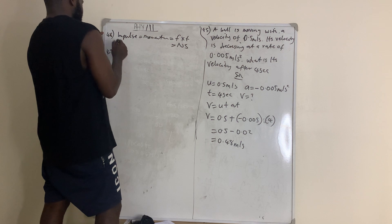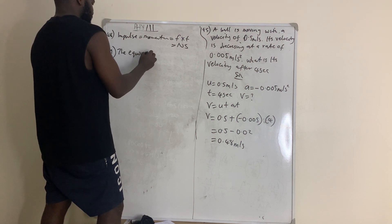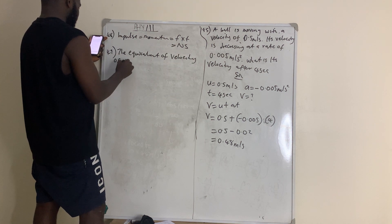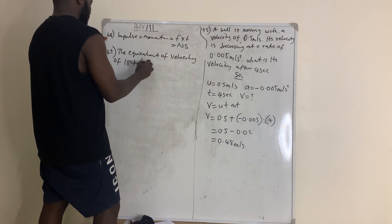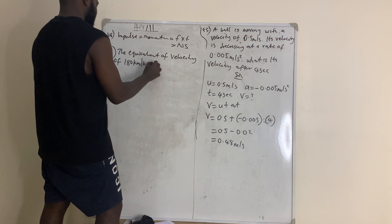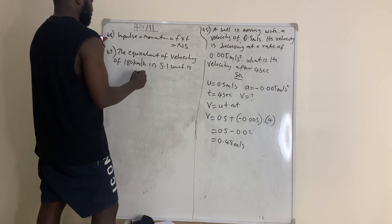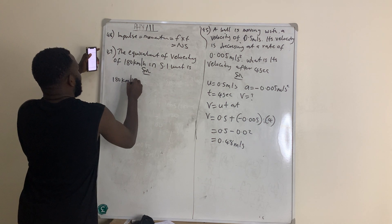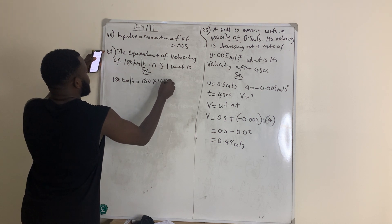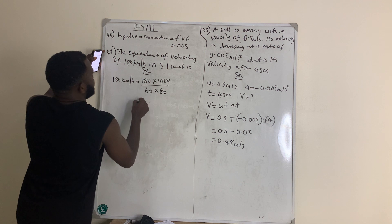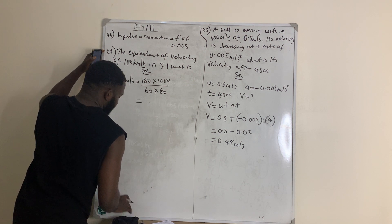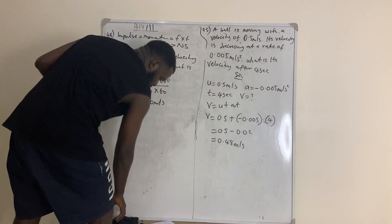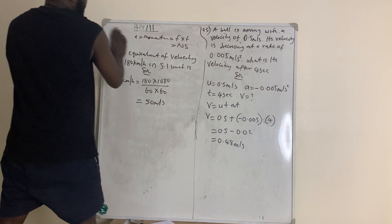Question 49 asks for the equivalent of 180 kilometers per hour in SI units. To convert: 180 km/h = 180 × 1000 ÷ (60 × 60). Do the math yourself — when I did it I got 50 meters per second. Try it and check if you also get 50 m/s.